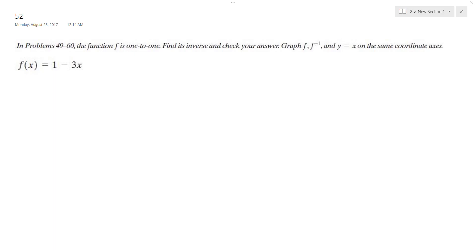So we're going to find the inverse of this function. To find the inverse, we're going to swap the x and the y. So we'll have x is equal to 1 minus 3y, and then we're going to solve for y again.